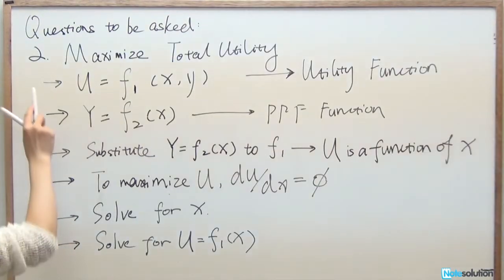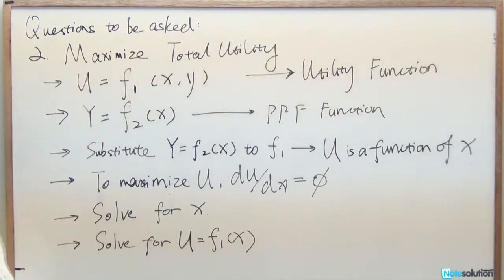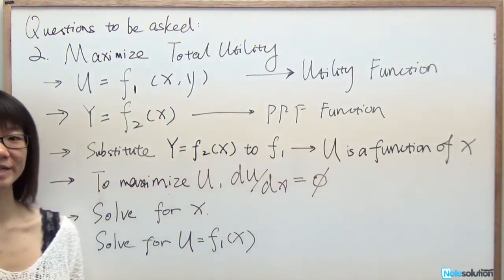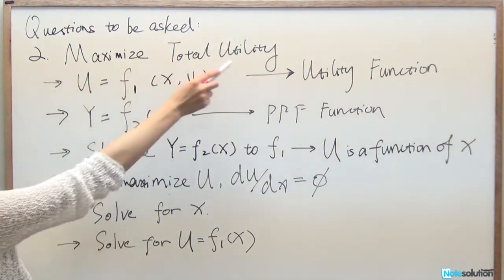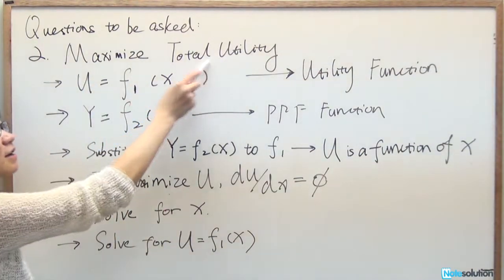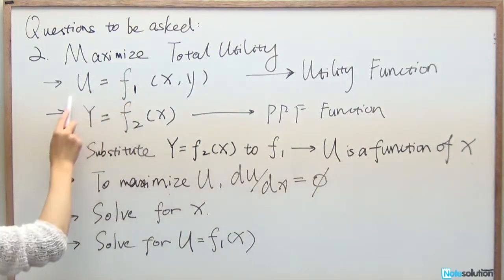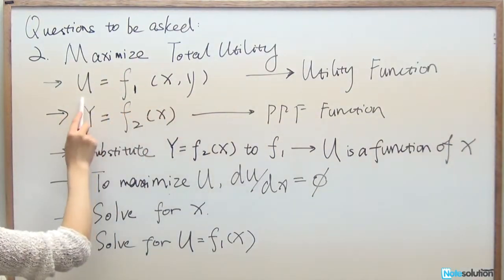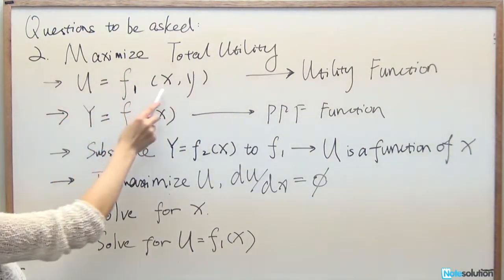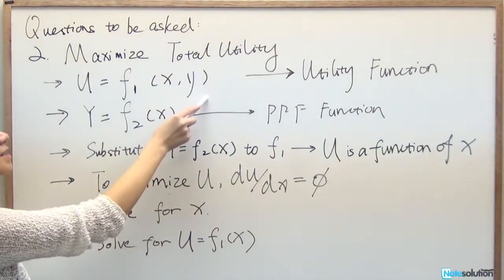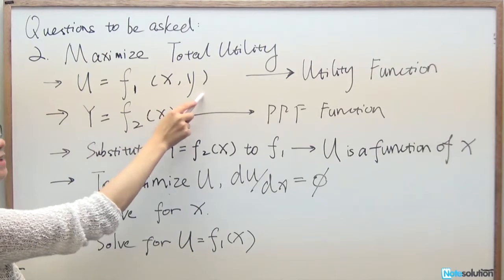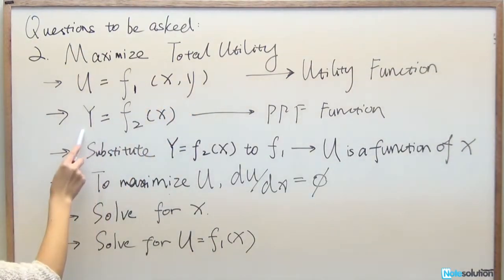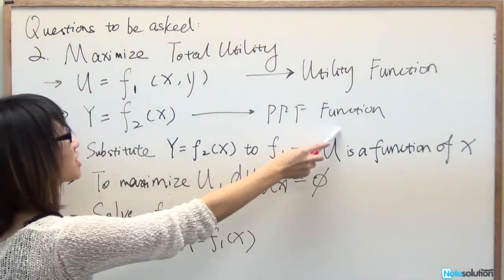The second type of question is how to maximize total utilities. To maximize total utility, you need two functions: the total utility function U expressed in terms of X and Y, and the PPF function where Y equals F(X).